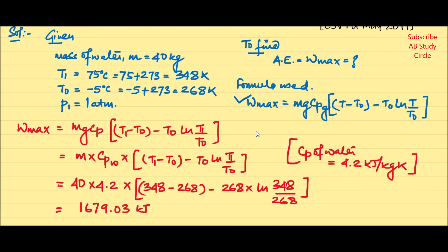And this is your answer — 1679.03 kJ. Very simple. We used this formula and everything was given. Note that the pressure information was extra information — it was not needed for this calculation.